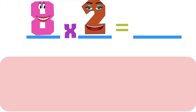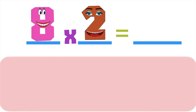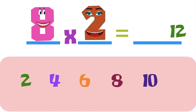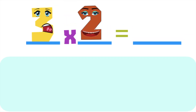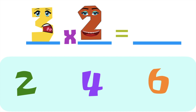How about this one? 8 times 2 is equal to blank. Let's skip count by 2 until we reach the eighth number: 2, 4, 6, 8, 10, 12, 14, 16. So, 8 times 2 is equal to 16. How about 3 times 2 is equal to blank? Let's skip count by 2 until we reach the third multiple: 2, 4, 6. So, 3 times 2 is equal to 6.